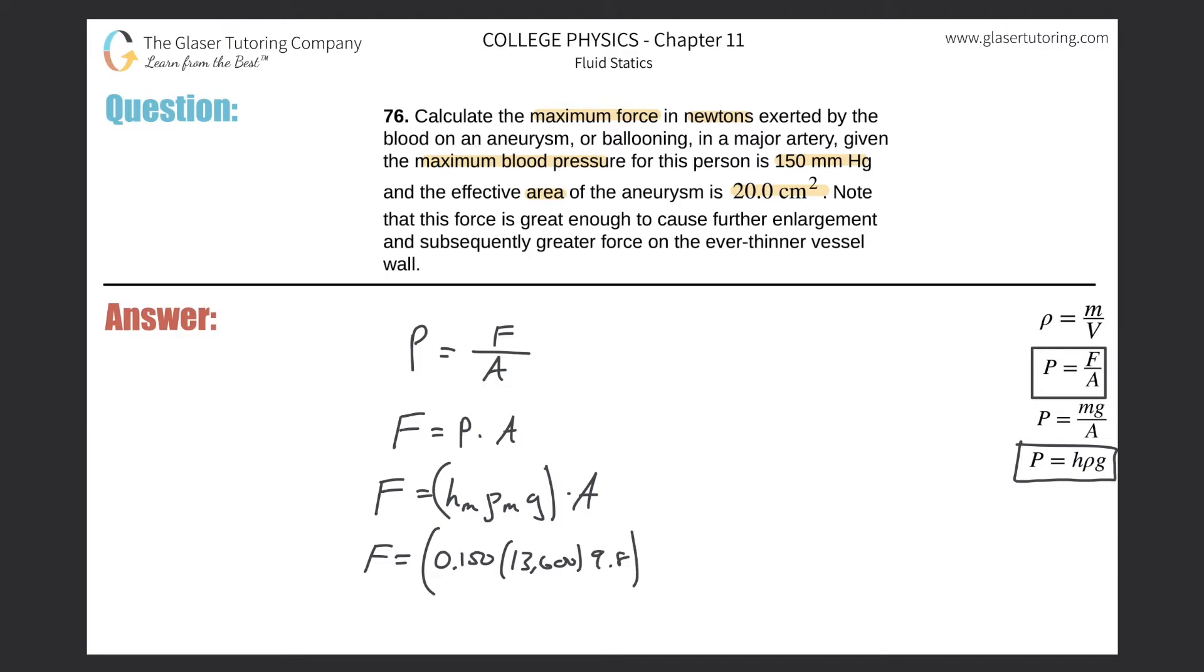Then multiplied by the area squared, but they gave it to us in centimeters. Remember we need meters squared, so I can do that little conversion up here - 20 centimeters squared multiplied by a centimeter on the bottom, meter on the top, 100 centimeters to one meter. Better square this result so that you cancel the centimeters appropriately and you also get your square meters.